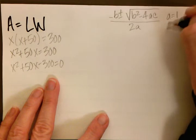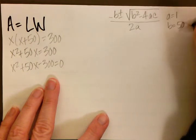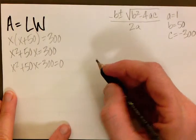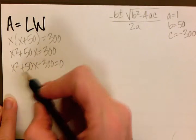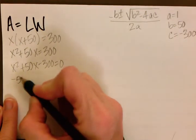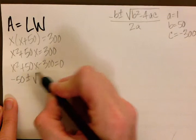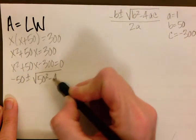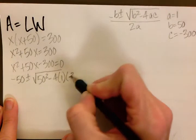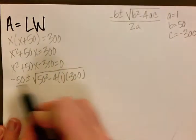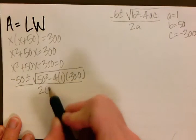Let's go ahead and plug everything in. So that gives us negative 50 plus or minus the square root of 50 squared minus 4 times 1 times negative 300, all of that over 2 times 1.